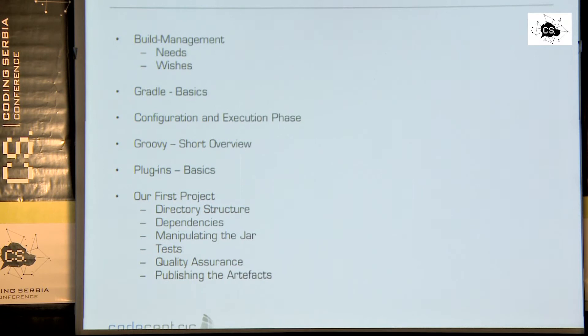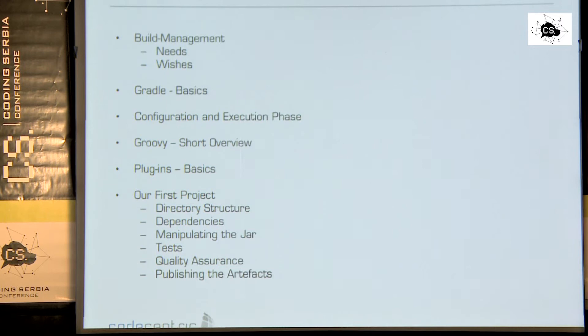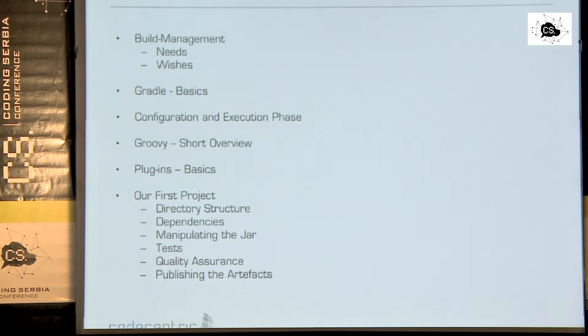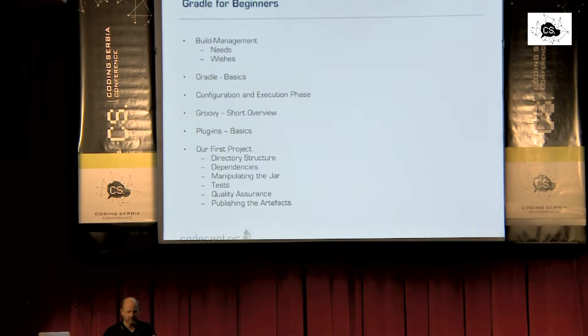Maven is the first build management system that introduced something like a lifecycle into the idea of building your software. It was brilliant at the time. If you look at the history, we had shell scripts first. Then came Make. That was prevalent for what felt like 200 years, but in fact it was only about 20 years.